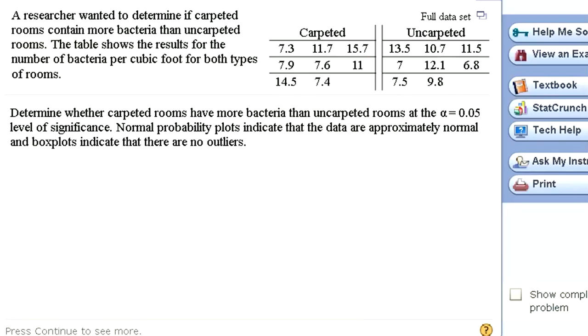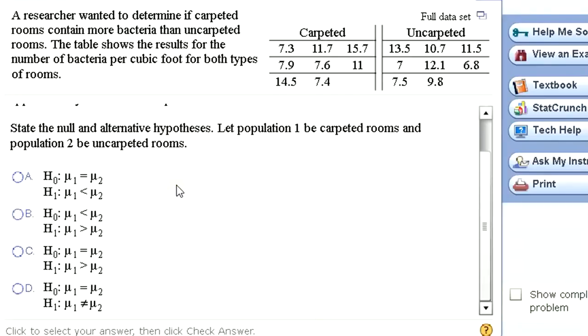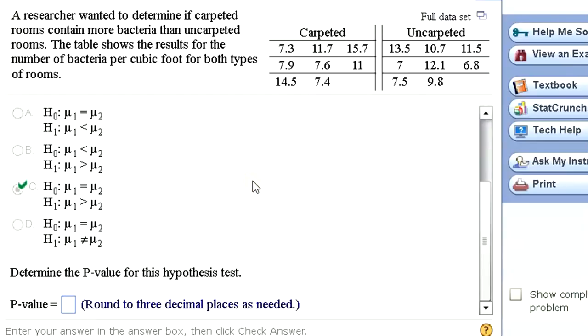First, let's answer some questions. We want to determine whether carpeted rooms have more bacteria at an alpha of 0.05. We're going to assume normality assumptions are all met. So let's continue with this. So state the null alternative. The null would be that the two populations have the same mean. But the alternative is that carpeted have more. So that's what we're going to choose, C, mu1 is greater than mu2. That the mean for carpeted rooms is greater than the mean for uncarpeted rooms.